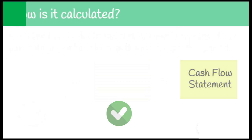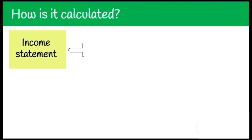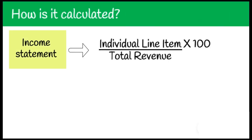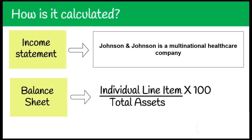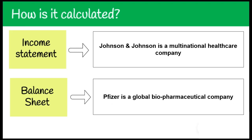Each line item in the income statement is expressed as a percentage of total revenue, and each line item in the balance sheet is expressed as a percentage of total assets. Now let's prepare a common size income statement and balance sheet for Johnson & Johnson, and afterwards we'll compare its income statement to one of its competitors, Pfizer.